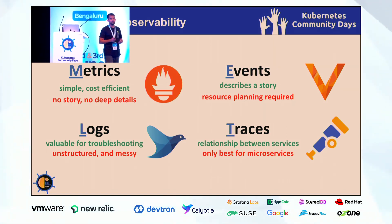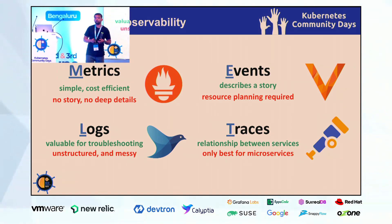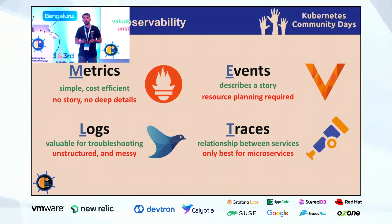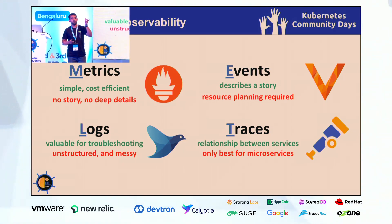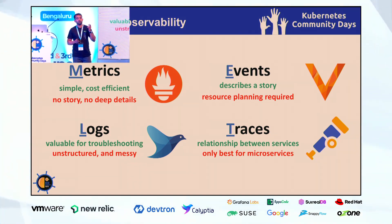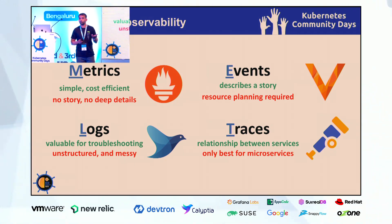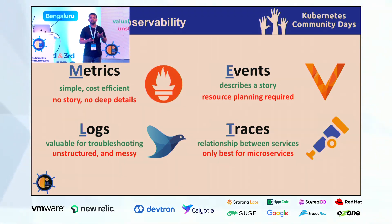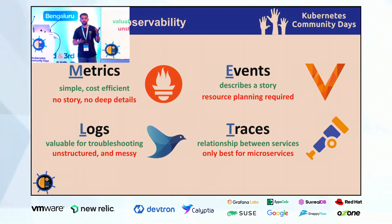The next thing is events. Events is a really important and powerful thing. It provides us detailed information, and we can add a lot more metadata. It describes a discrete action at a particular point, and we can add a lot more events which helps us in identifying problems — identifying exactly when what happened. But events requires a lot of resource planning. If we keep sending all our events from all our systems, we'll see a lot of unnecessary events and a lot more cost if you are using a particular tool.